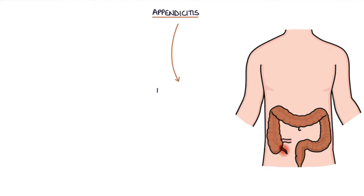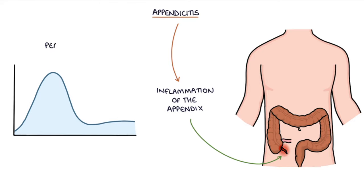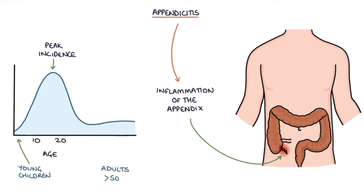Appendicitis is inflammation of the appendix. The peak incidence of appendicitis is in patients aged 10 to 20 years old. It can occur at any age, but it's less common in young children and adults over the age of 50.